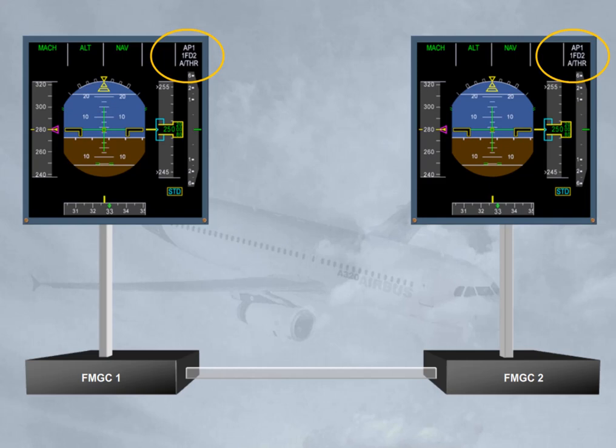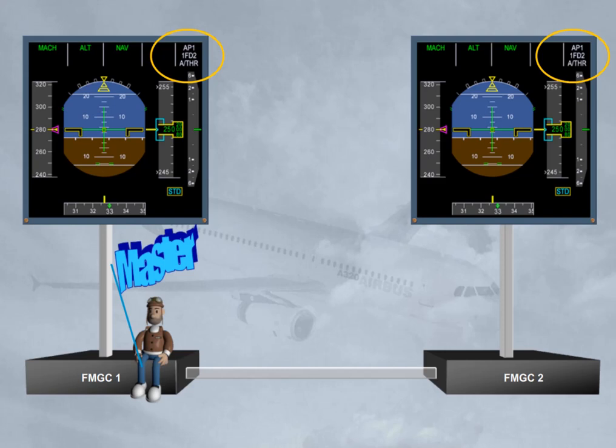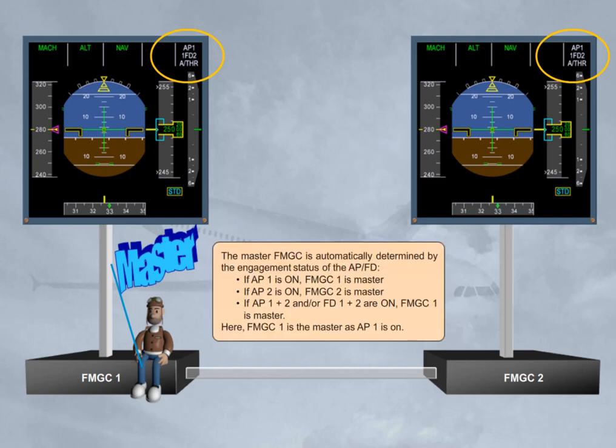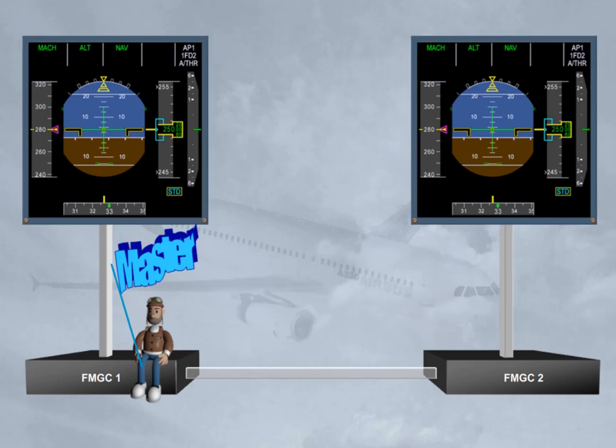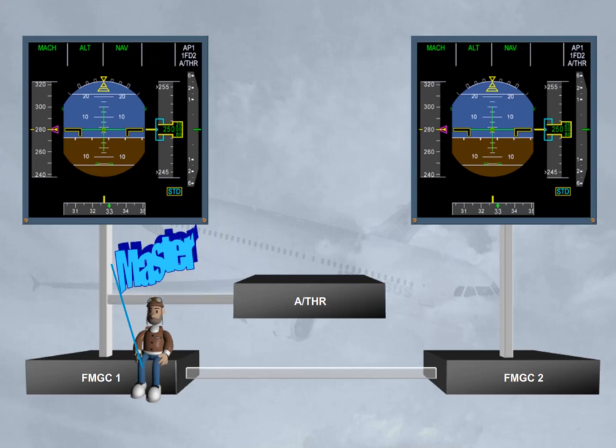Here, FMGC 1 is the master as Autopilot 1 is on. The autothrust is driven by the master FMGC. Note: when Flight Director 1 plus 2 are on, each FMGC drives its Flight Director and FMA on its on-side PFD.